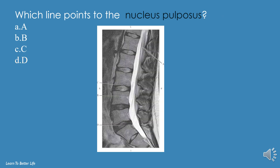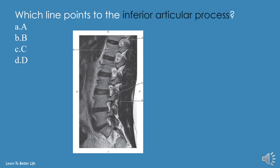Which line points to the nucleus pulposus? A, B, C, or D? The answer is D. Which line points to the inferior articular process? A, B, C, or D? The answer is B.